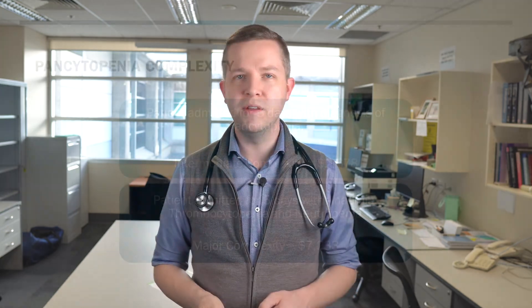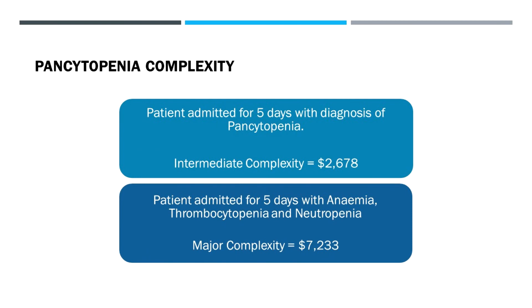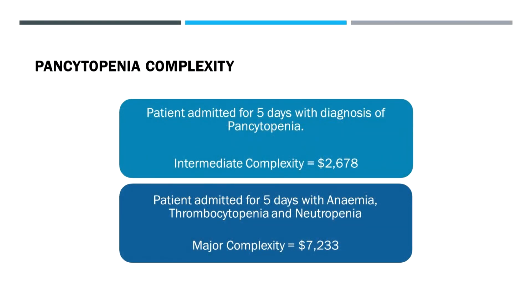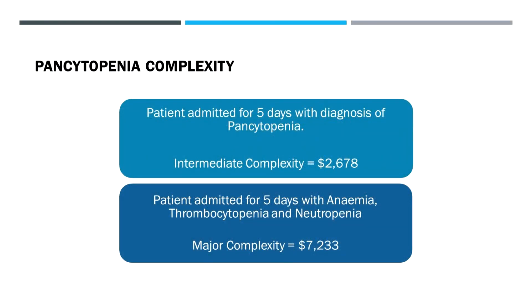Whatever you think it is — even if not completely certain — put in the likely or confirmed cause of any of those cytopenias. Here's an example of how pancytopenia doesn't code properly: someone admitted for five days with a diagnosis of 'investigation of pancytopenia' — that's all that's ever documented — gets two and a half thousand dollars worth of funding. Compare that to someone admitted with anaemia, thrombocytopenia, and neutropenia documented separately, which will get major complexity at seven thousand dollars — almost three times the funding. That's a big deal.